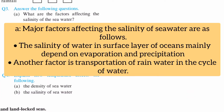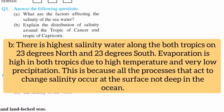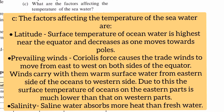Question 3: Answer the following questions. A) What are the factors affecting the salinity of the seawater? B) Explain the distribution of salinity around the Tropic of Cancer and Tropic of Capricorn. C) What are the factors affecting the temperature of the sea water?